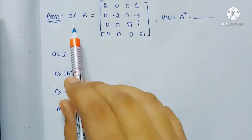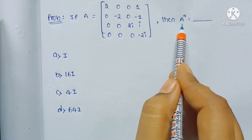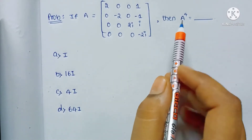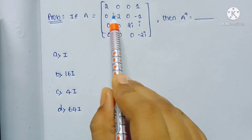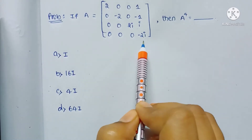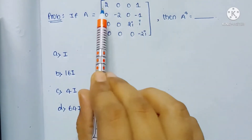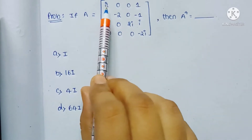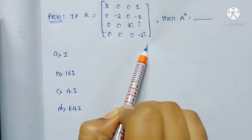Coming to the problem, they have given matrix A and asked to find the value of A power 4. If you see here, this is an upper triangular matrix. For an upper triangular matrix, lower triangular matrix, or diagonal matrix, the eigenvalues are the diagonal elements only. So the eigenvalues here are 2, -2, 2i, and -2i.